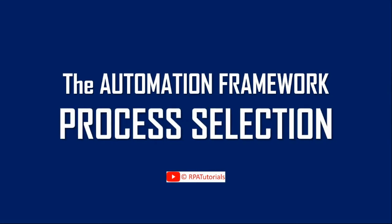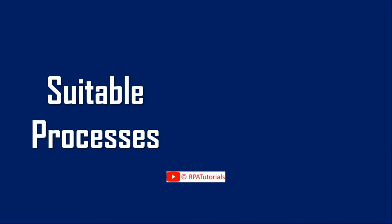In this phase we will see how businesses can identify and prioritize processes eligible for automation. Before that, let us have a relook at which type of processes are suitable for automation and can be shortlisted for further analysis.